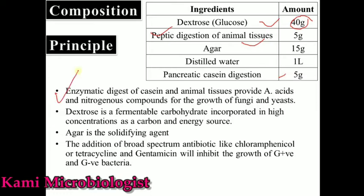The enzymatic digest of casein and animal tissue provides amino acids and nitrogenous compounds that are specially used for fungi and yeast growth. Dextrose is the carbohydrate source for fungi, and when fermented it produces a large amount of fungal growth because dextrose acts as a carbon and energy source for fungal division and growth.